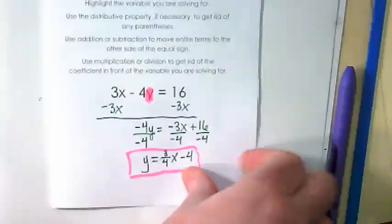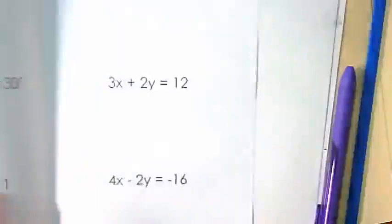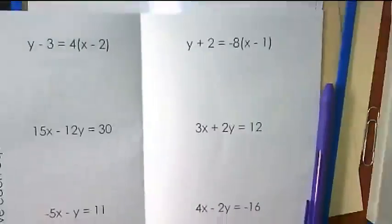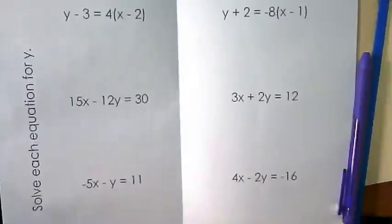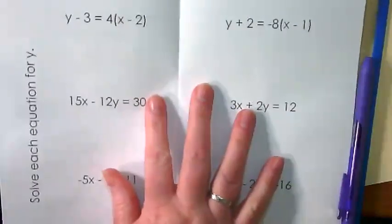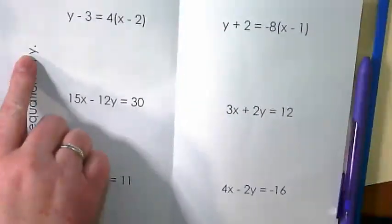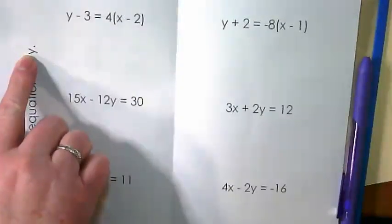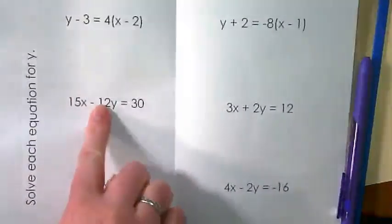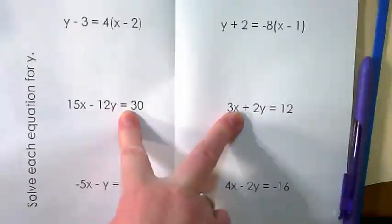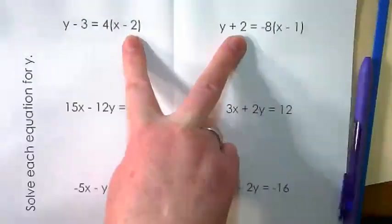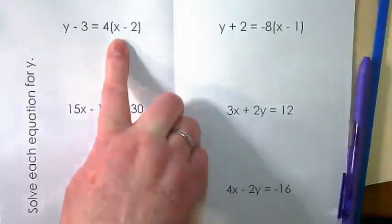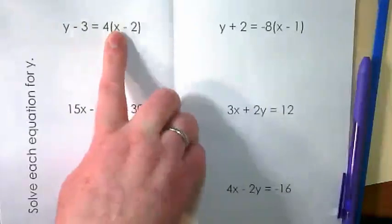So I'd like you to open this up and look on the inside. There are six problems in here and we're going to spend some time practicing this today. All of these you're going to be solving for Y. Some of them are in standard form like these two in the middle, and some of them are in point slope form. Let's do this first one together because it does have a parenthesis.